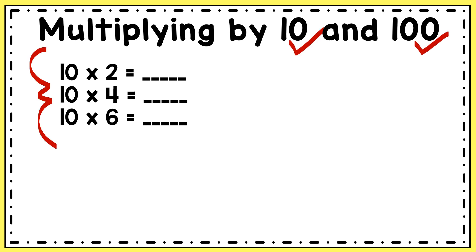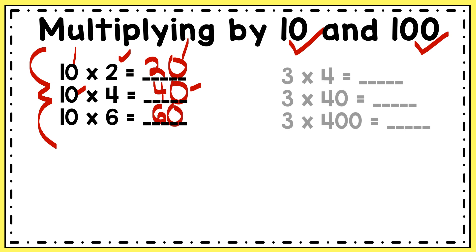In these examples you see 10 times 2, and I know that equals 20. Now 10 ends in a 0, so that means my answer when I multiply by 10 will end in a 0. 10 times 4 is 40 — 10 ends in a 0, my answer ends in a 0. 10 times 6 is 60, and the same rule applies.